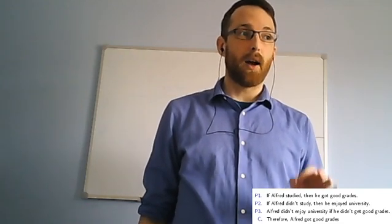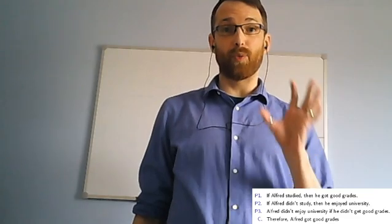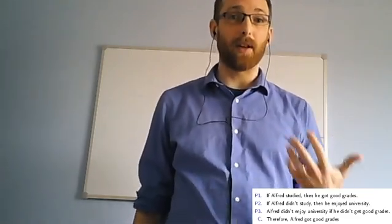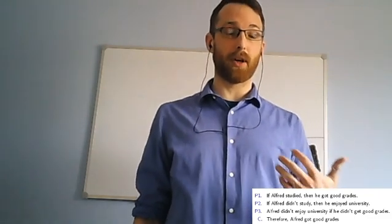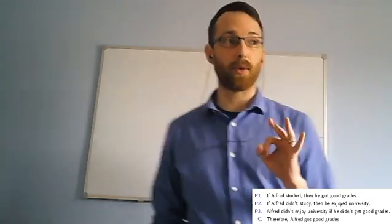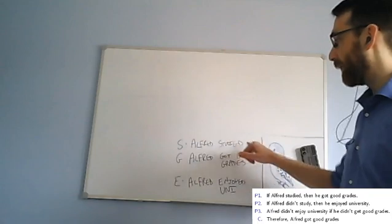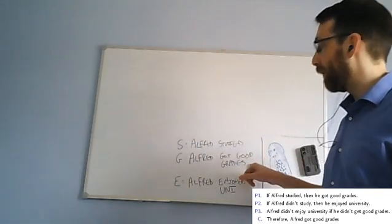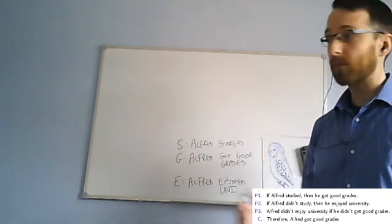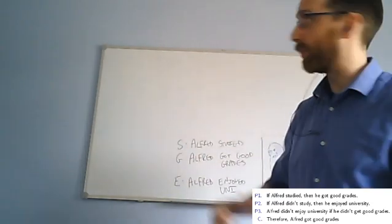I am going to do one thing that we didn't have available at the time. You hadn't learned any of the connectives yet, but it is helpful, I think, to symbolize the argument in TFL. So I'm just going to do this quickly because that's not the topic we're working on here. I think in order to symbolize this argument, we just need three atomic sentence letters. So here are the ones I've chosen. We'll use S for Alfred studied, G for Alfred got good grades, and E for Alfred enjoyed university.